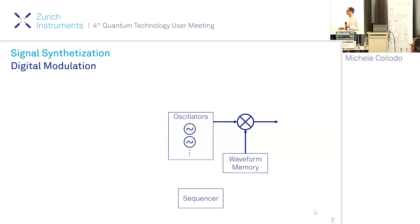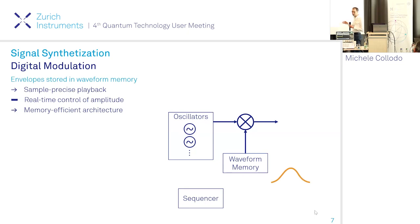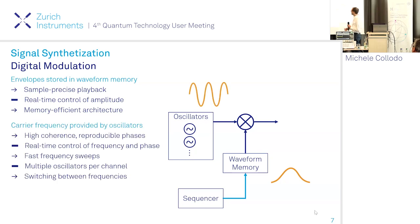The core engine in our instruments is digital signal modulation. The two main components for this digital modulation are: first, the pulse envelope saved in a sample-precise way on the waveform memory, where real-time control of parameters enables a memory-efficient architecture. Second, carrier frequencies are provided by hardware oscillators on the FPGA, allowing very high coherent signals. We also have real-time control over frequency and phase, enabling fast frequency sweeps in hardware, and since we have multiple oscillators per channel, we can switch between oscillators on one channel.